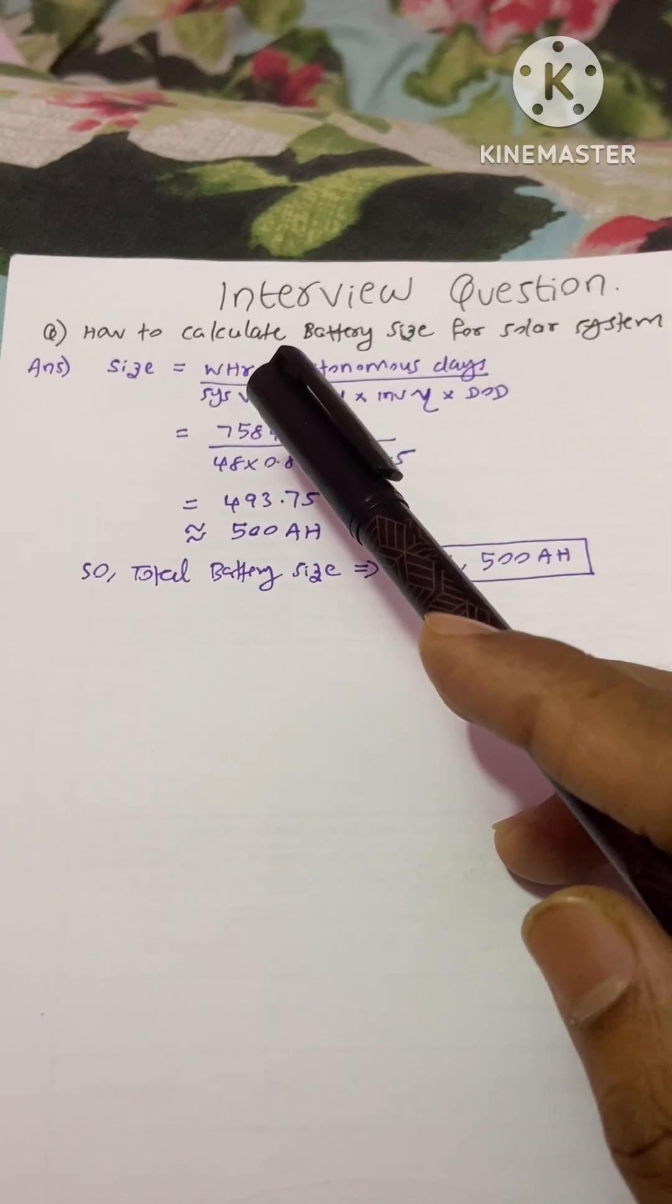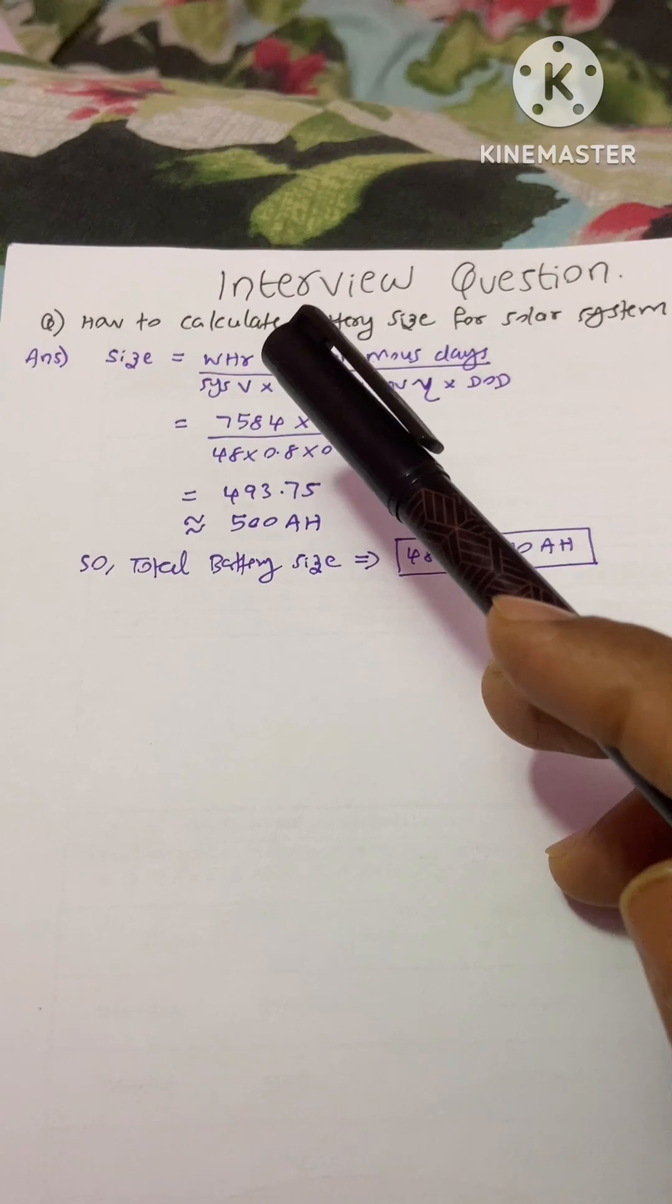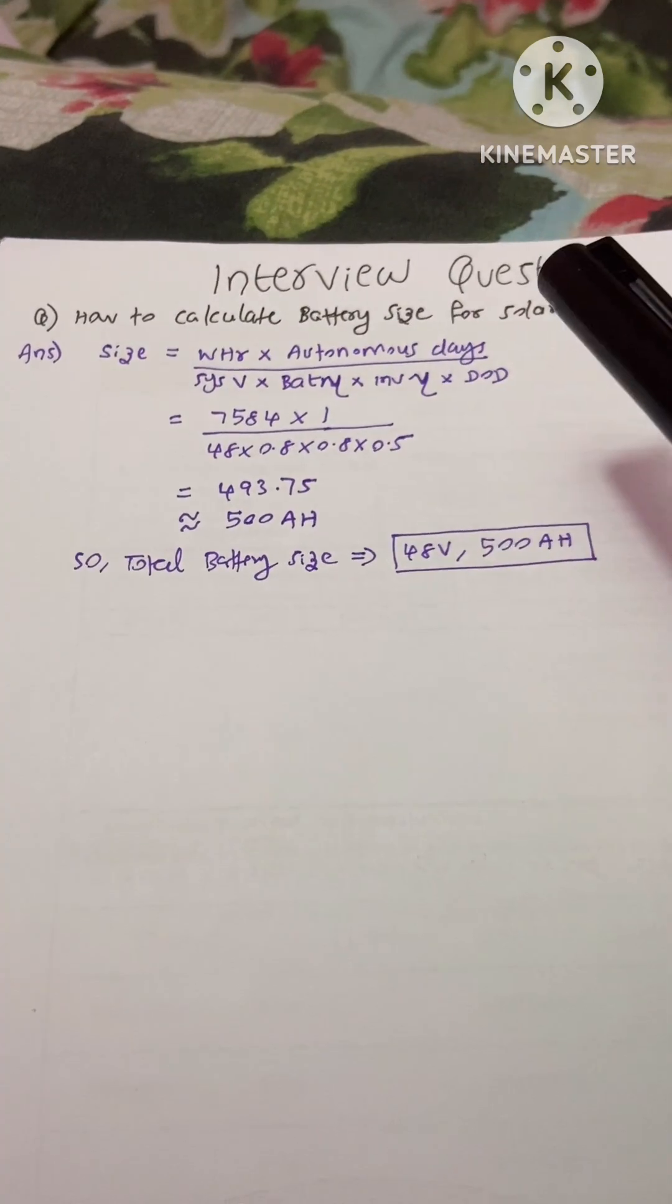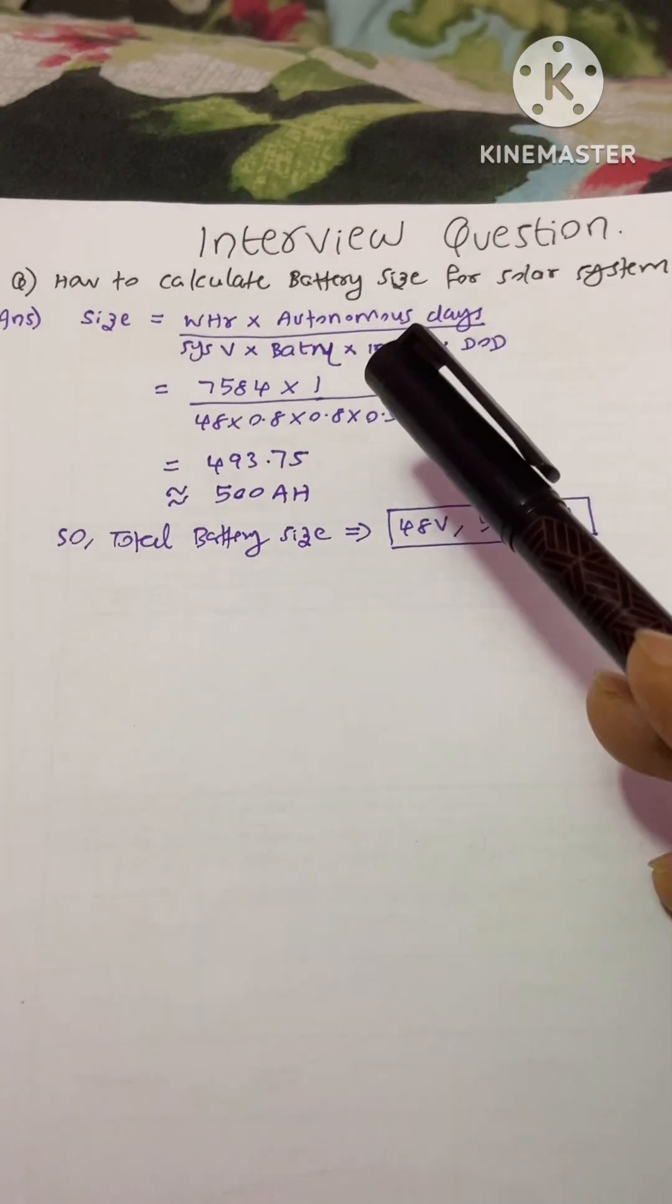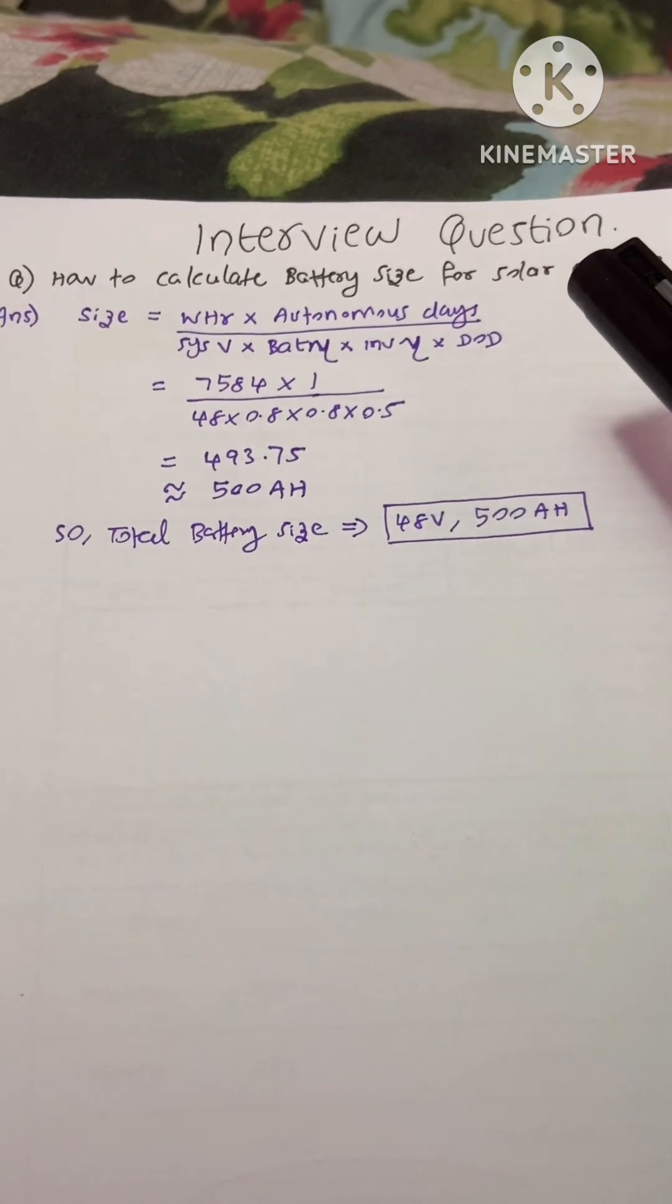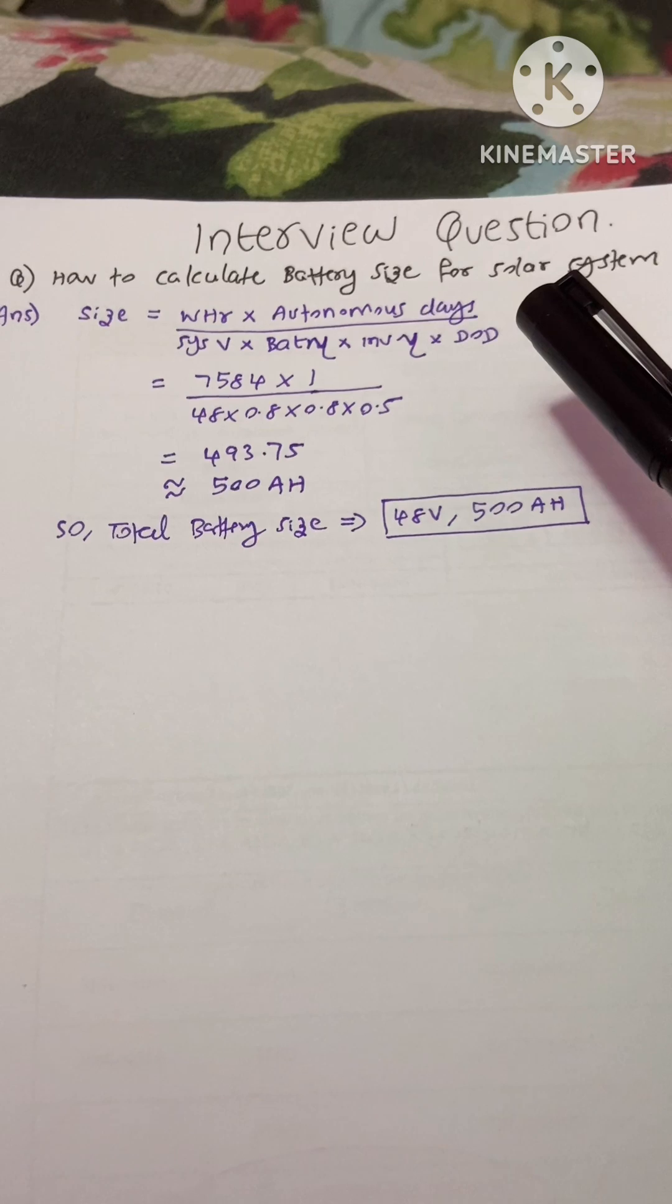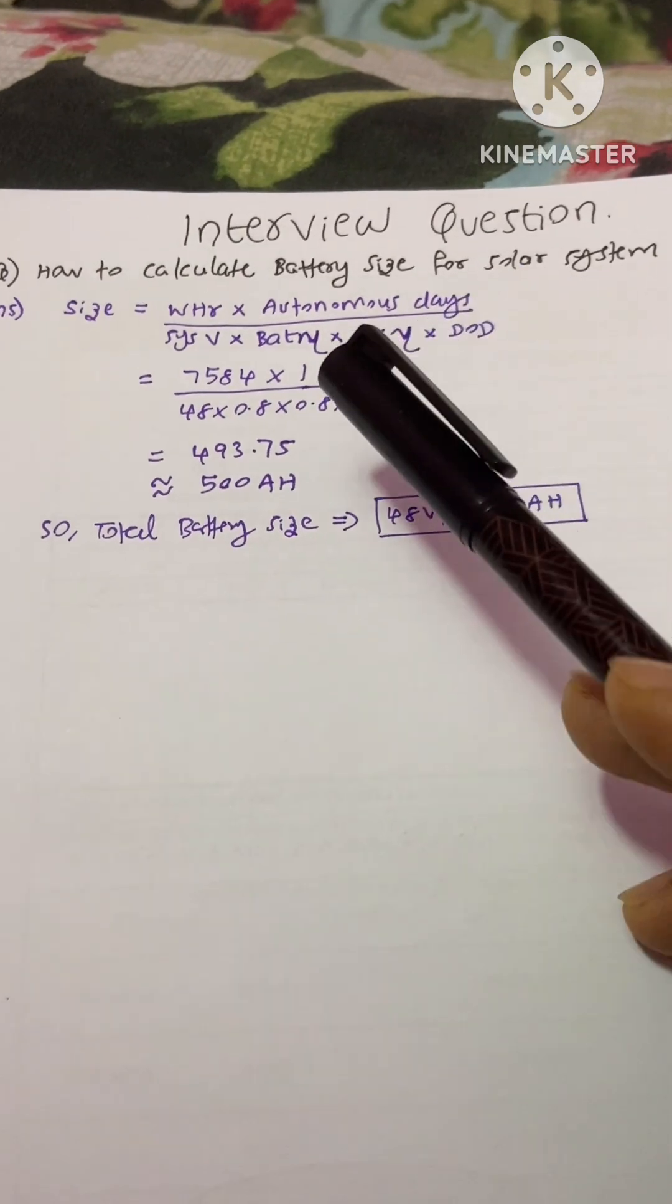Watt hour is calculated by multiplying device load with the hours they are utilized. Autonomous days means the days in which you would not get any solar radiation, that means cloudy days. Here I have taken number one.